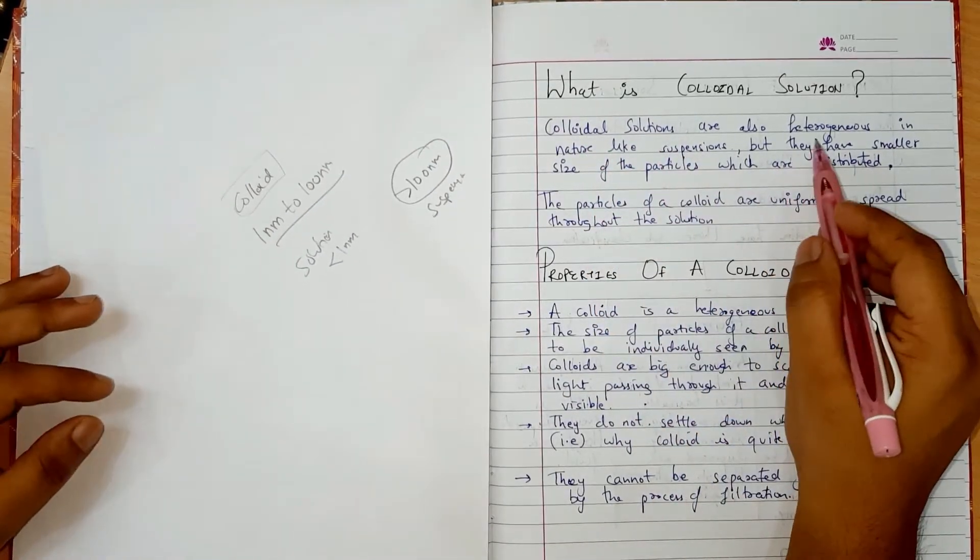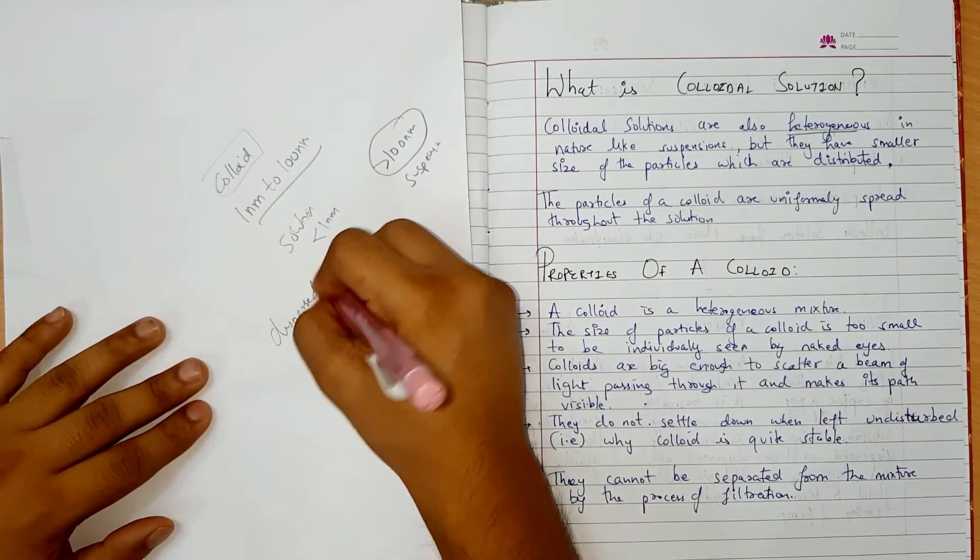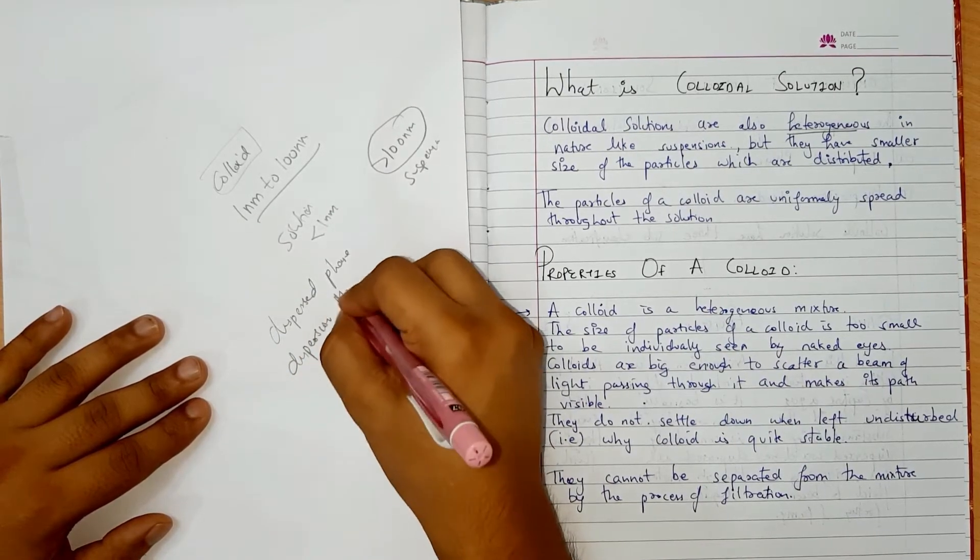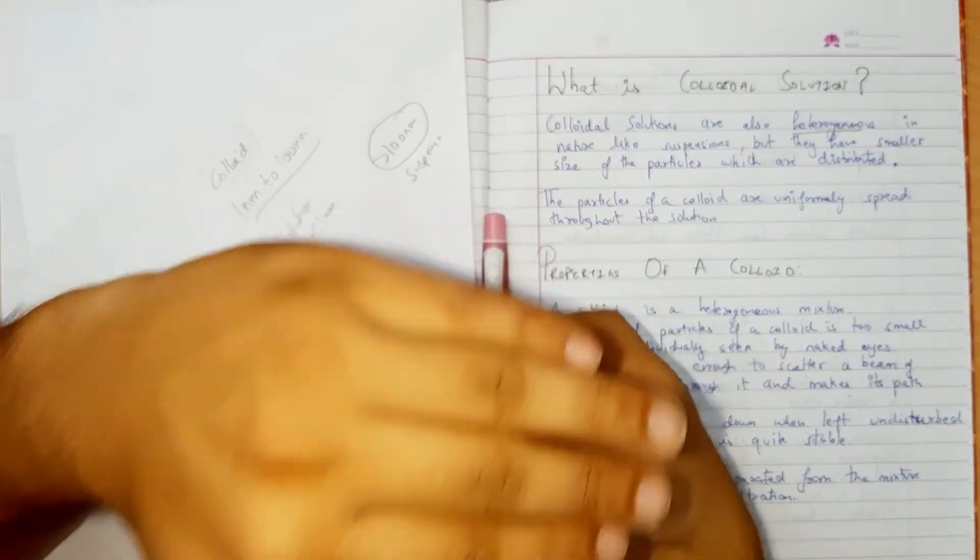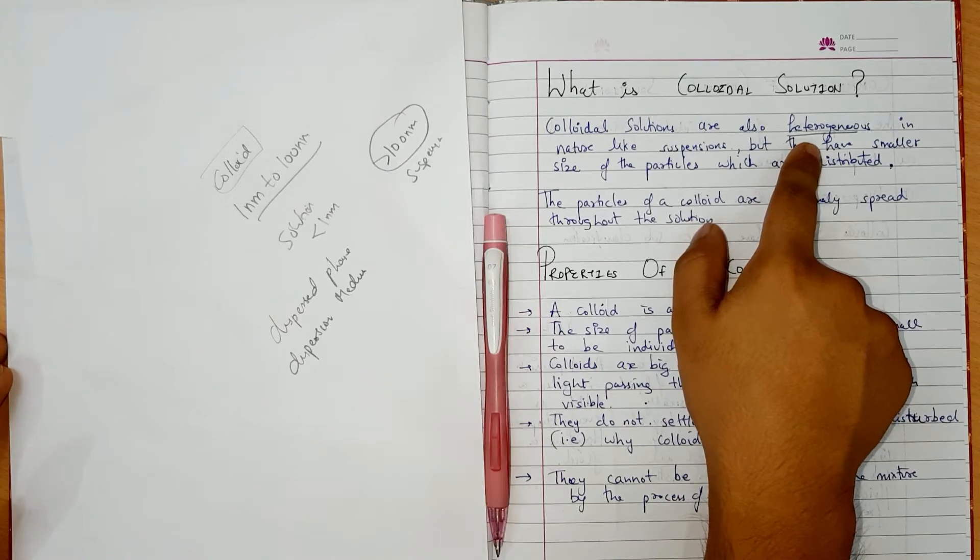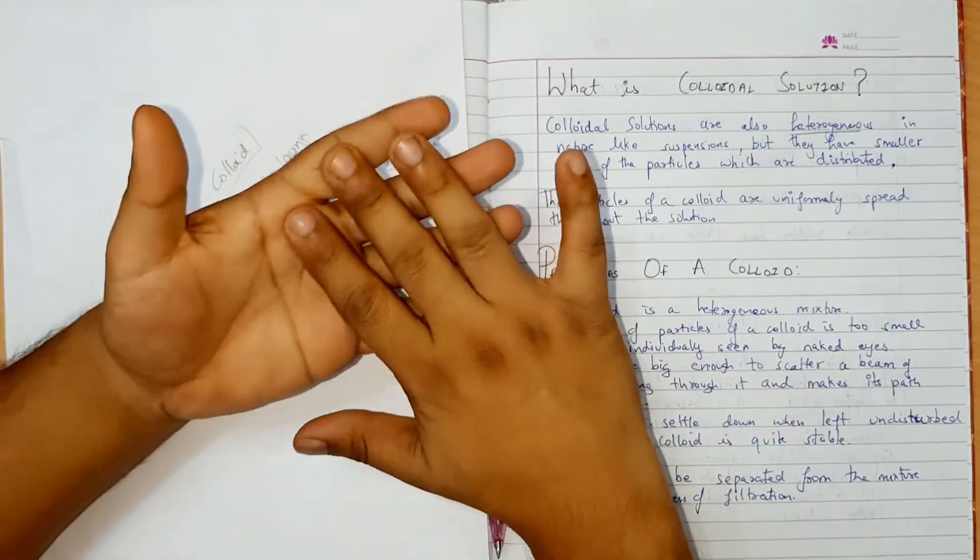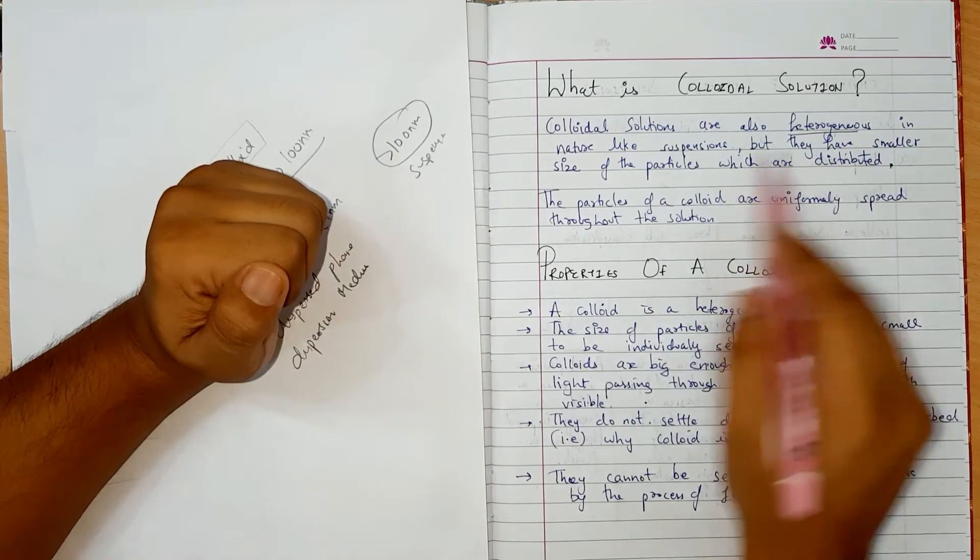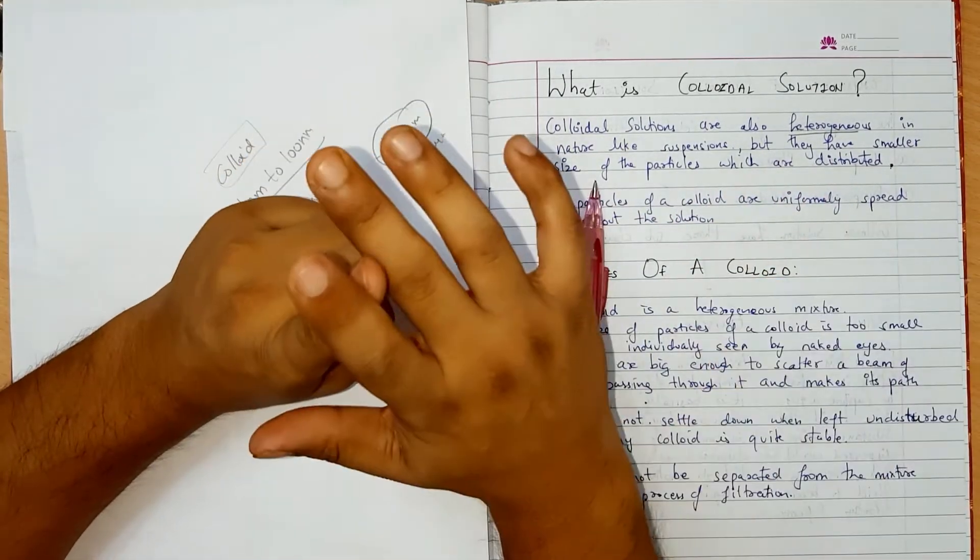Colloidal solutions are also heterogeneous in nature like suspension. That known as dispersed phase and dispersion medium. And the colloidal solution we can separate them out. That's why it is heterogeneous in nature or we have two phase system.